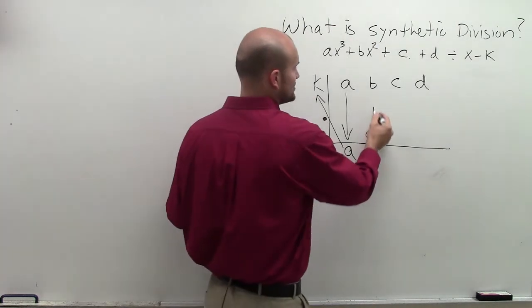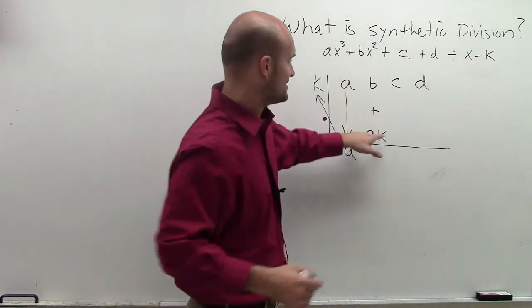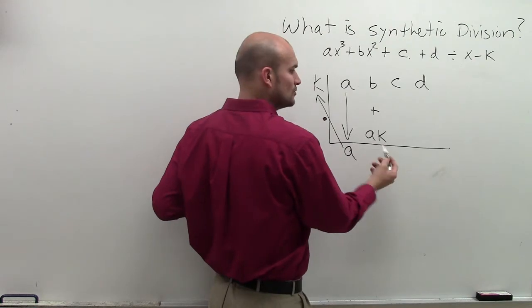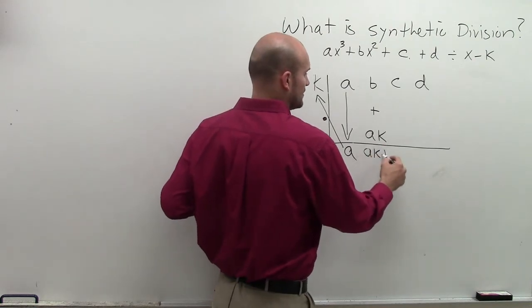Then what you do is you add vertical. So b plus ak is going to be your next solution. So it'd be ak plus b.